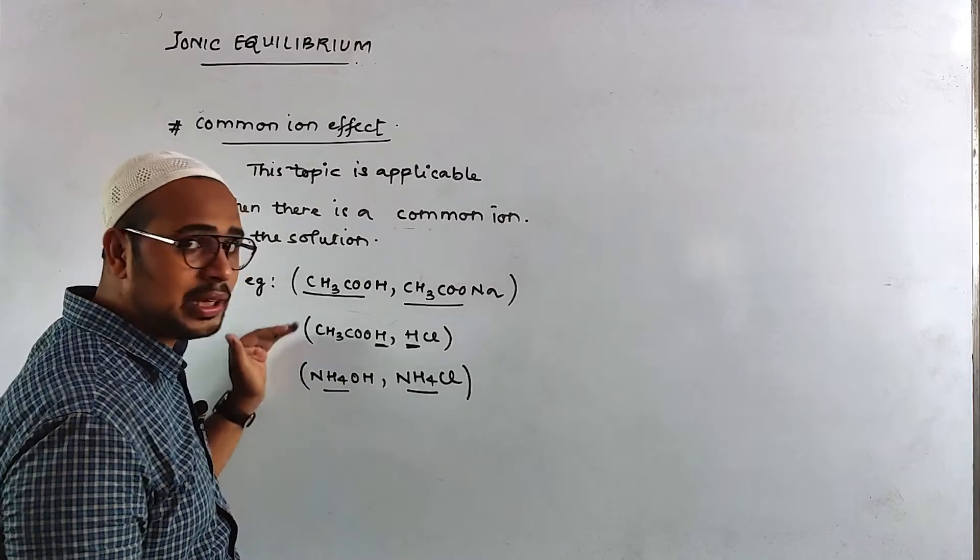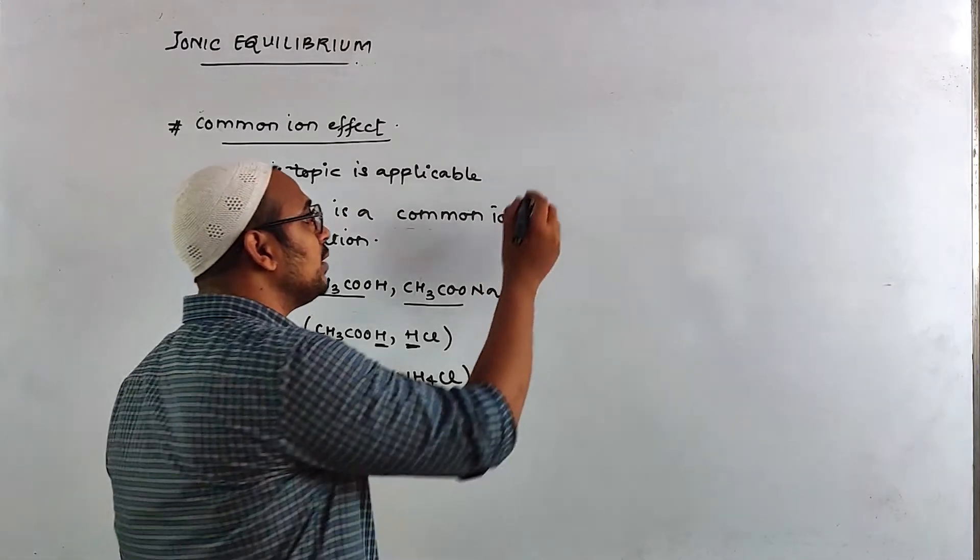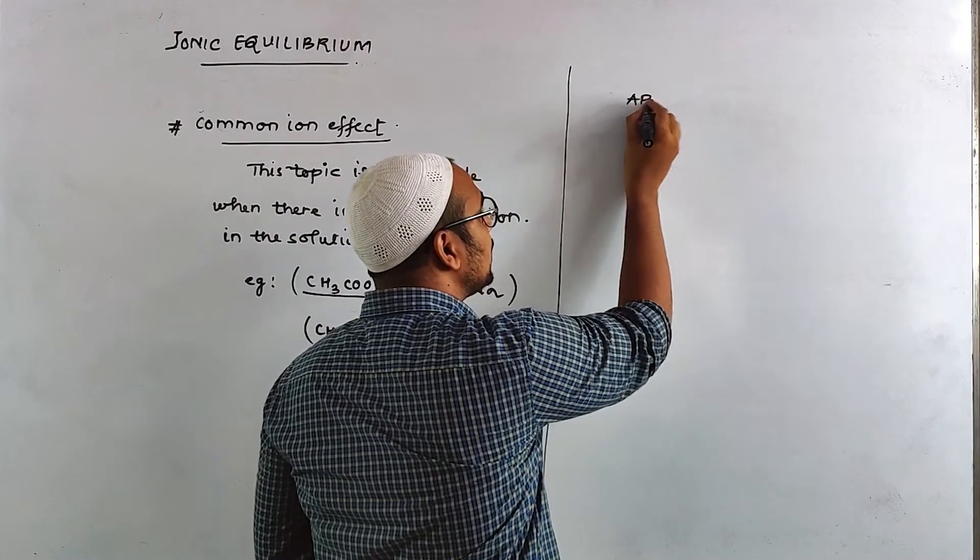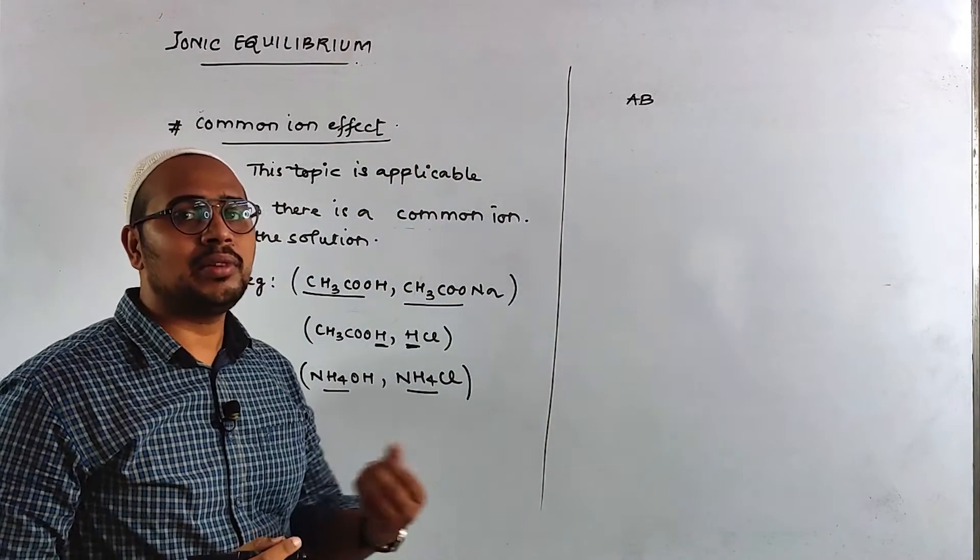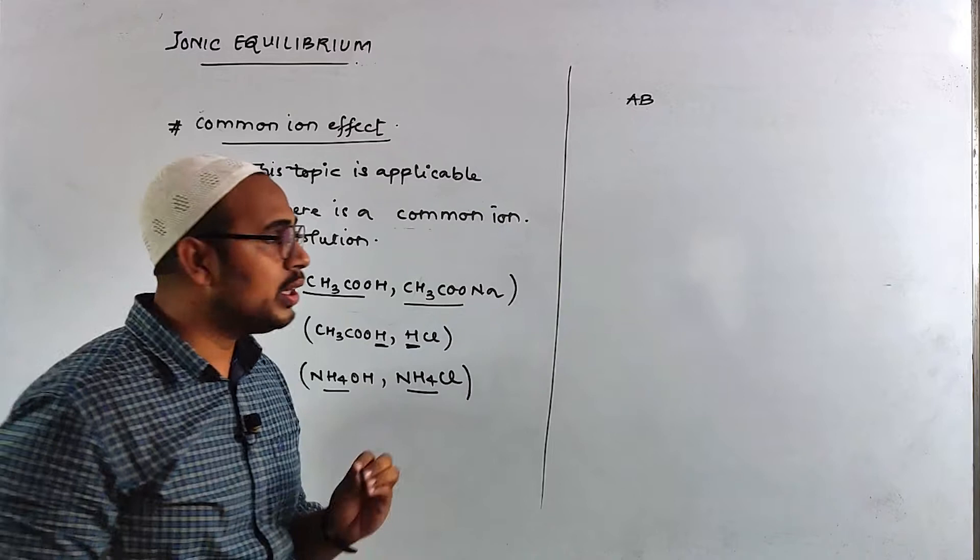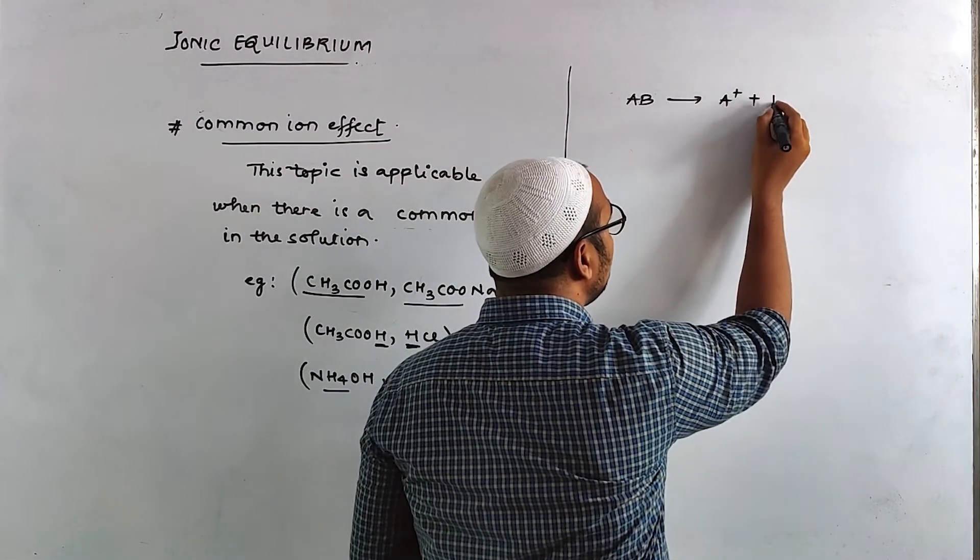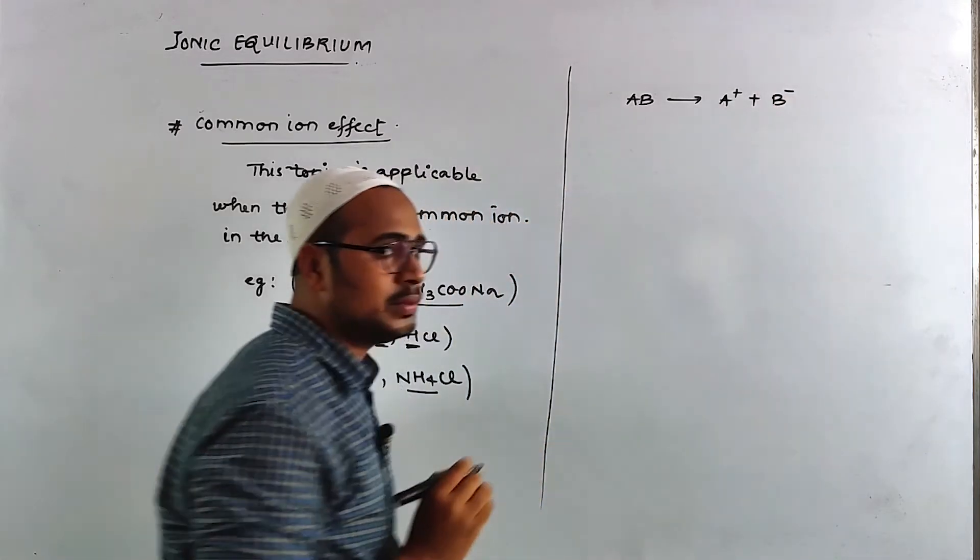So where do you apply? What happens? Now we will see. You have a particular solution. This is a component available. This is a breakdown. When you break it, this is A plus and B minus. Okay?